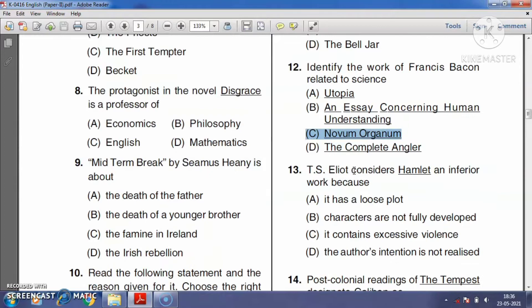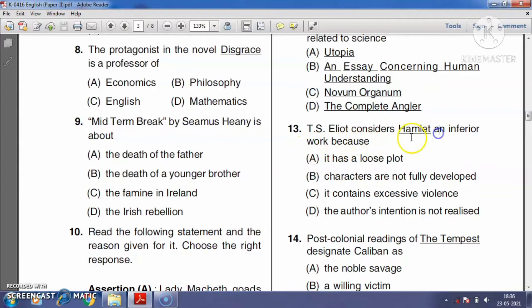Question number thirteen: T.S. Eliot considers Hamlet an inferior work because it has a lost plot, the characters are not fully developed, it contains excessive violence, or the author's intention is not related? 'Hamlet and His Problems' is an essay by T.S. Eliot in which he comments on Shakespeare's Hamlet due to its lack of objectivity and because the author's intention is not clearly related in that drama. So the right answer is option D.